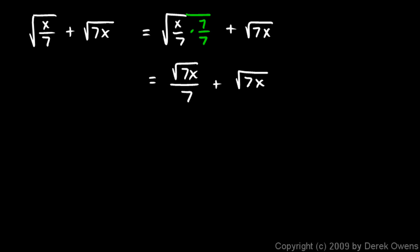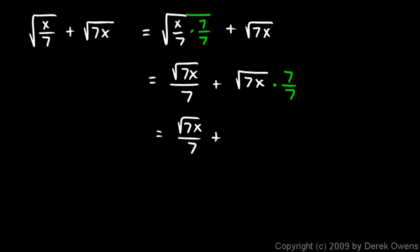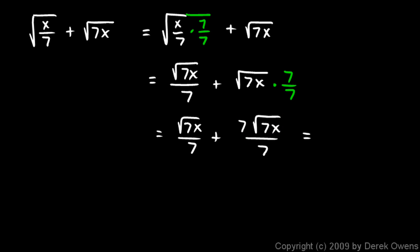Now I'm going to take that square root of 7x and multiply it by 7 over 7. That will make both of these terms have a denominator of 7. This gives me the square root of 7x over 7 plus 7 times the square root of 7x over 7. So the square root of 7x over 7 plus 7 root 7x over 7 gives me 8 times the square root of 7x over 7, and that's my answer.